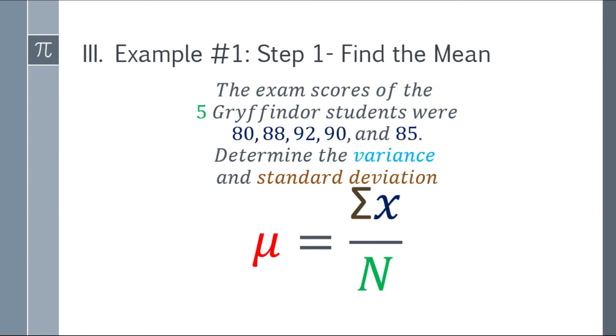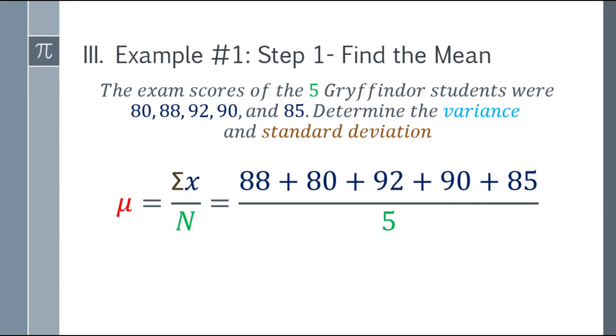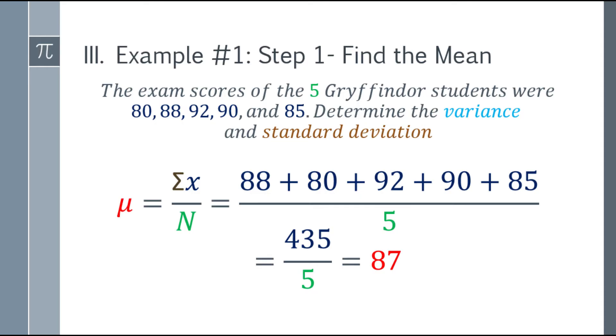Okay, now the first step here is find the mean. So the mean is just like finding the average. For this one, you will just add the five numbers, 88 plus 80, plus 92, plus 90, and 85, and divide by 5. So the answer will be 435 over 5 equals 87. So our population mean here is 87.